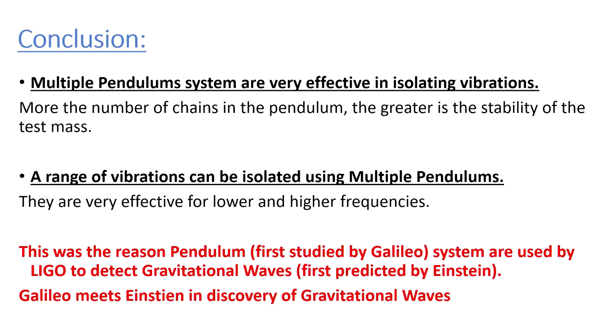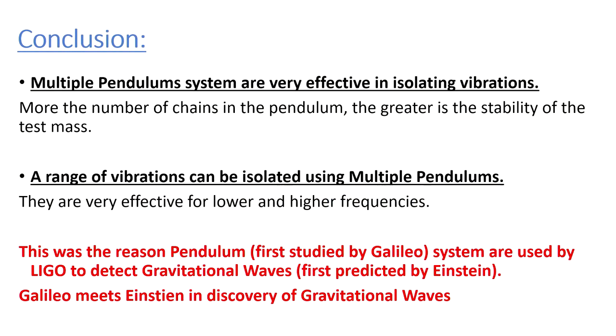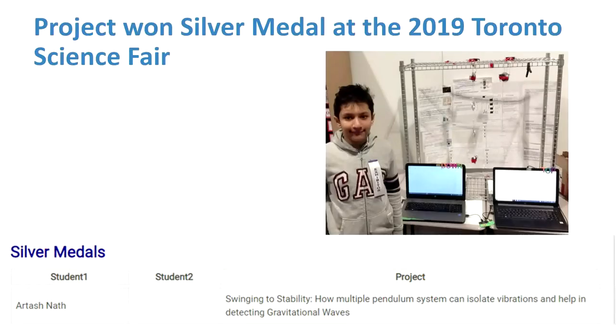Our conclusion is that the more pendulum systems you add — a fifth, a sixth — the more efficiently it works and the more vibrations it decreases. They're also more effective for higher frequencies, as shown in our graph. Pendulums were first studied by Galileo, and the theory of gravitational waves was developed by Einstein. By the way, I showed this project at the Toronto Science Fair and got a silver medal.